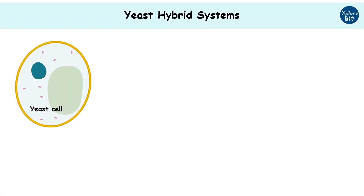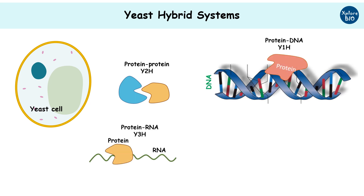Yeast is one of the most commonly used systems for various molecular biology studies. This is because eukaryotic proteins express and function more properly in a eukaryotic model system like yeast than any prokaryotic system such as E. coli. One of the most popular applications of the yeast system is for studying protein-protein interaction, known as the yeast two-hybrid system. Later on, other modified systems to study protein-DNA interaction, protein-RNA interaction, and ligand-protein interaction were also developed.